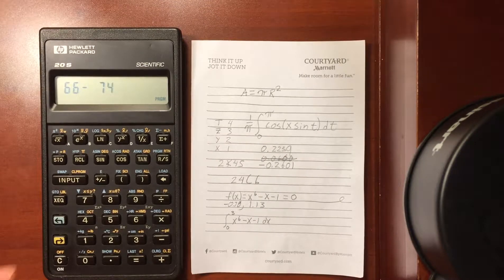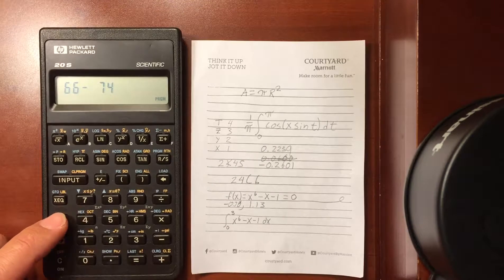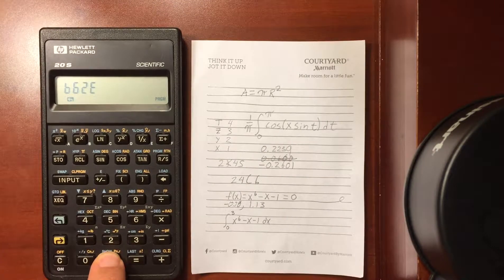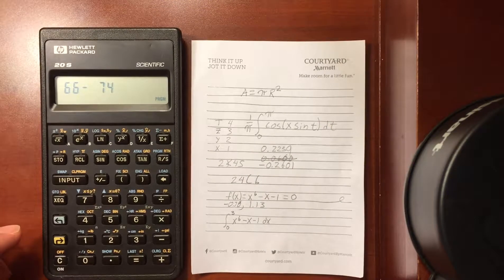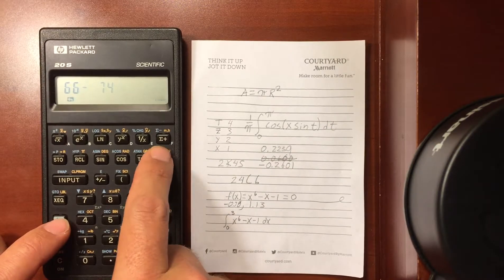And that should be it. Well, I need to do the equal sign. Let me check my checksum right here. B62E. Alright, so exit my program space.